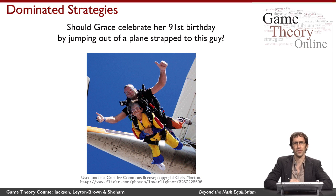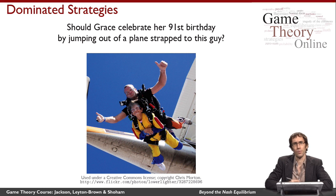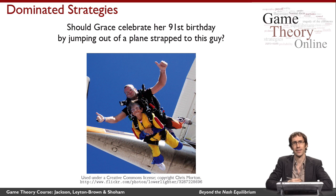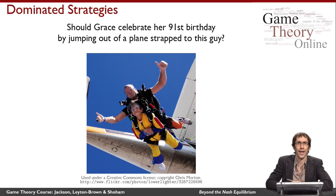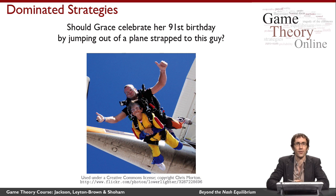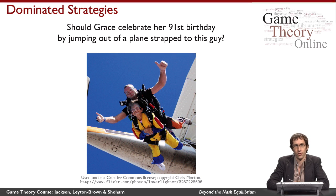So how was she able to reason that this was sensible? Well, if she looked at the payoffs of the game, she would see that Bruce's action of not packing the parachute safely was very bad, not only for Grace but also for himself. In fact, it was a dominated strategy. And knowing that he's rational, Grace reasoned that he would never play a dominated strategy, and so she was able to change the game by removing this dominated strategy.